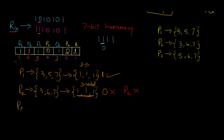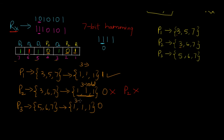For P3, he checks positions 5, 6, and 7 — all three are 1. The received P3 is 0. Again, odd number of high bits with even parity means P3 should have been 1. There is an issue with P3 as well. The receiver has now detected that some bit has an error and there is an issue with the data.